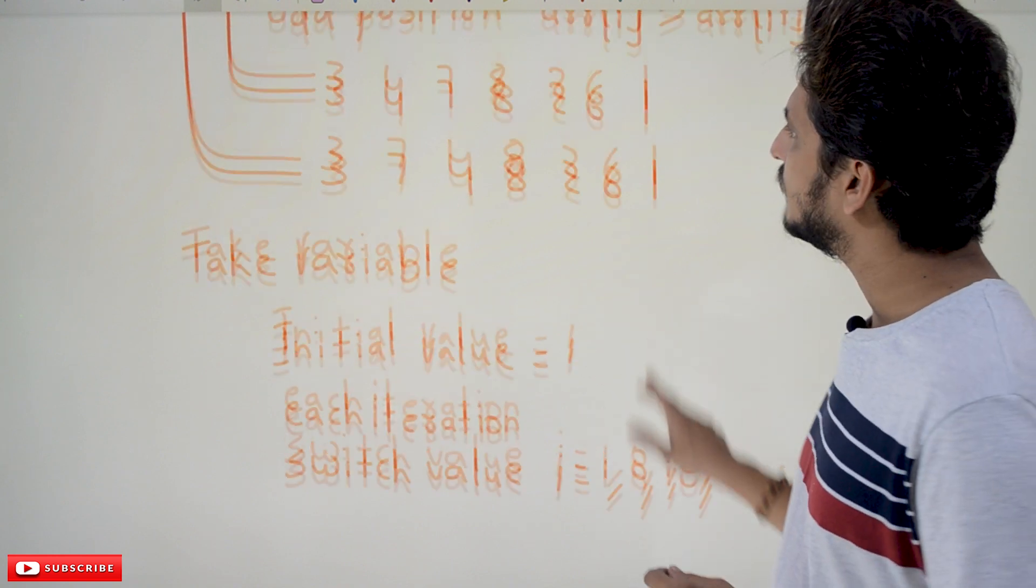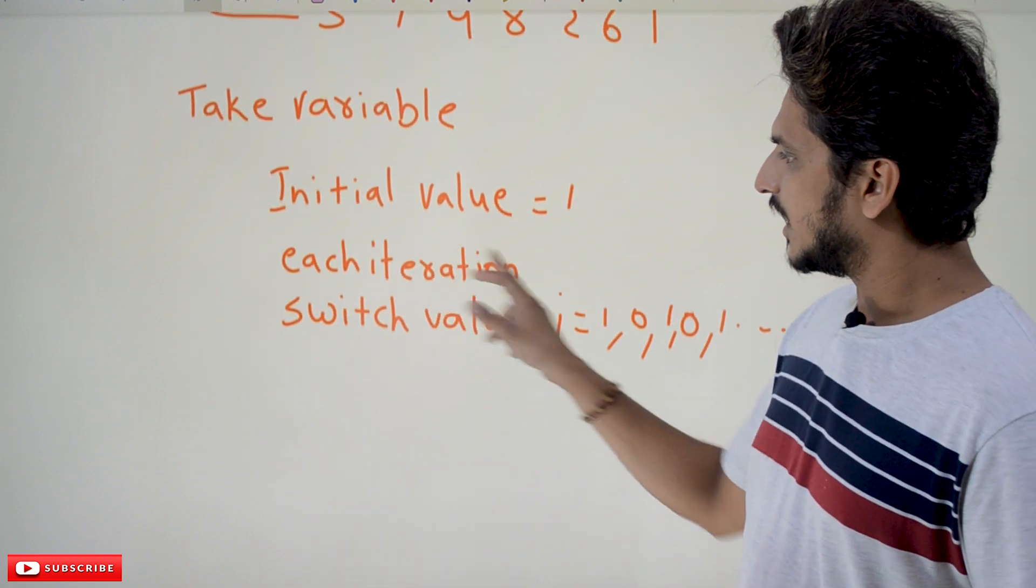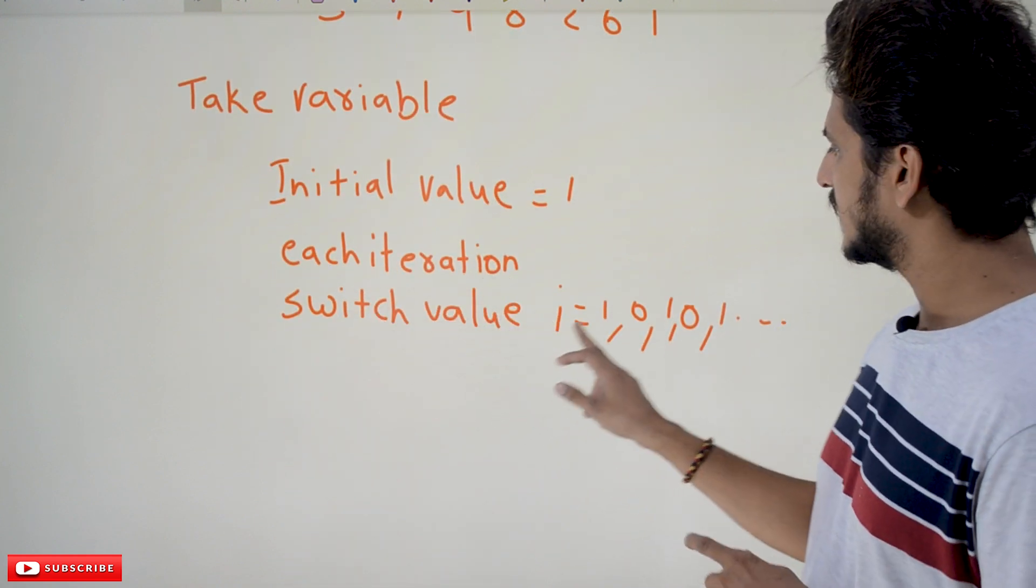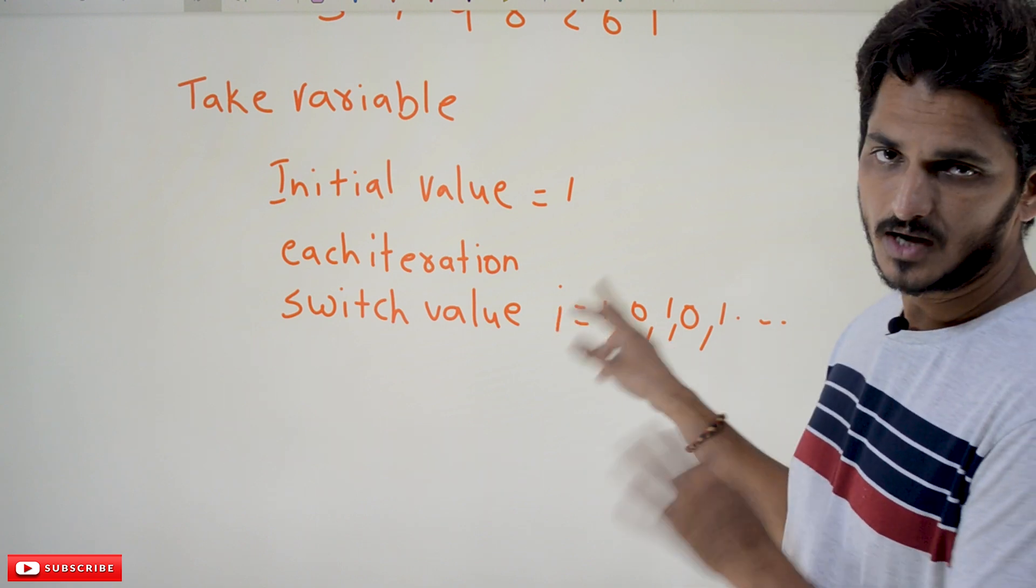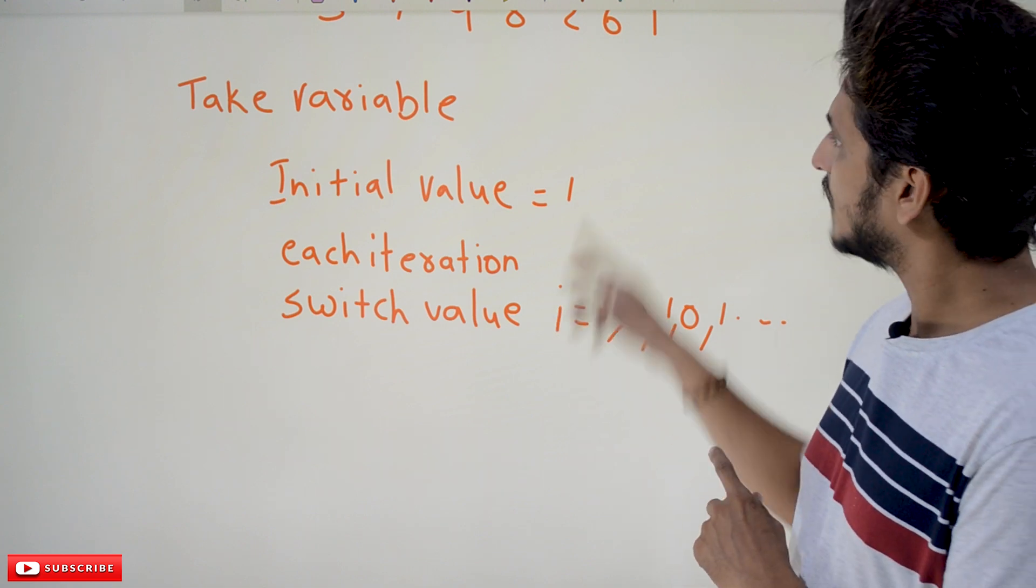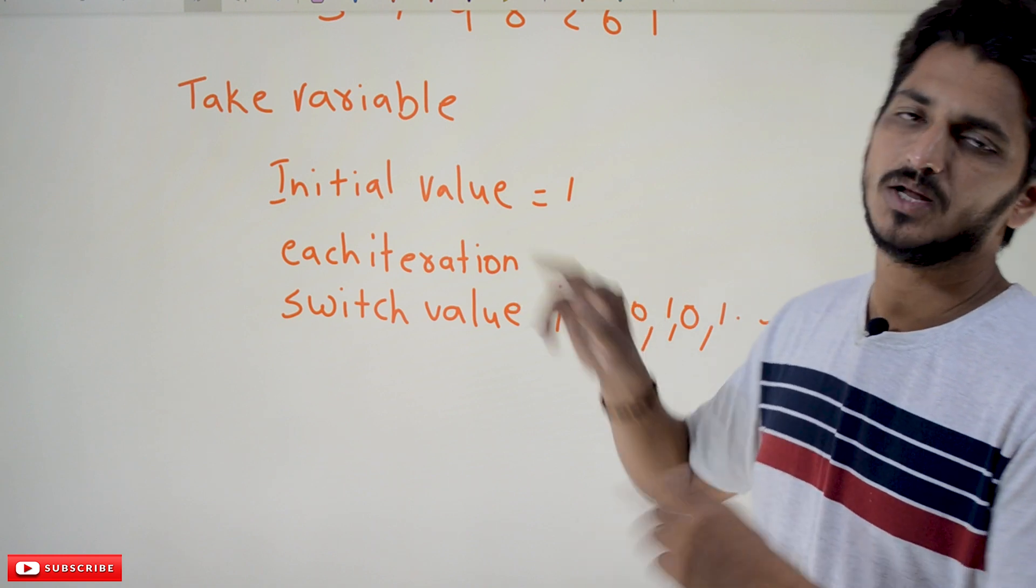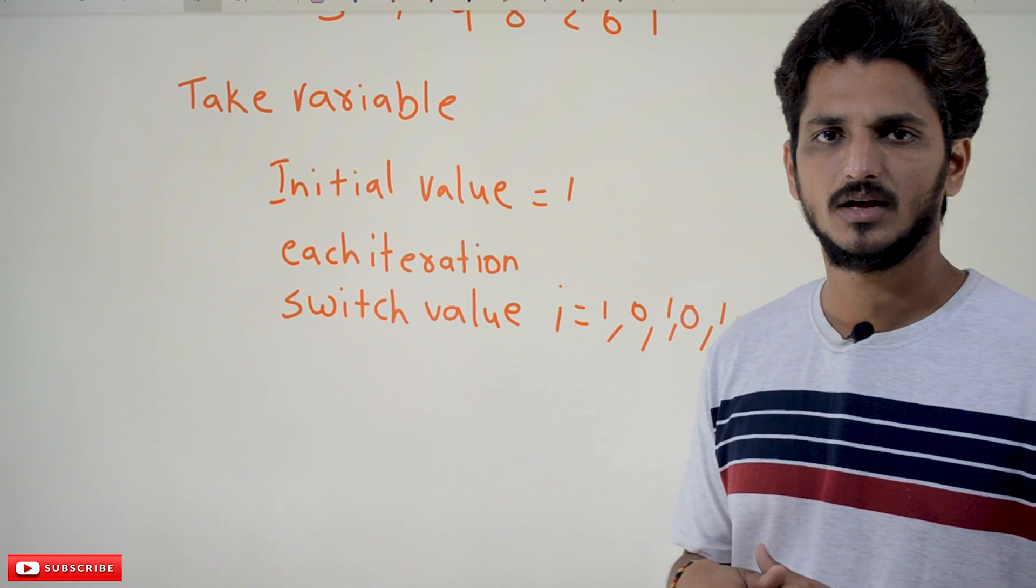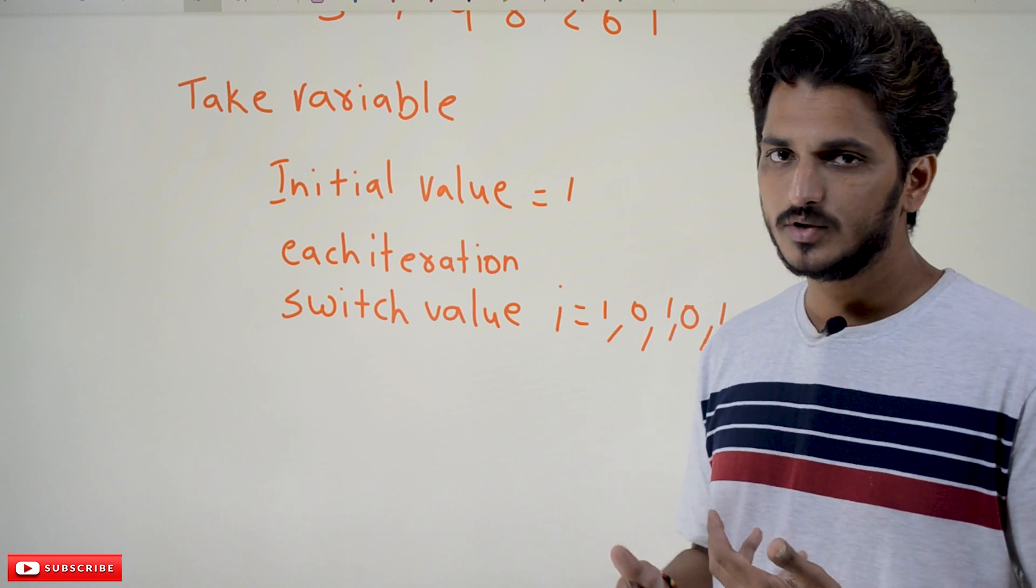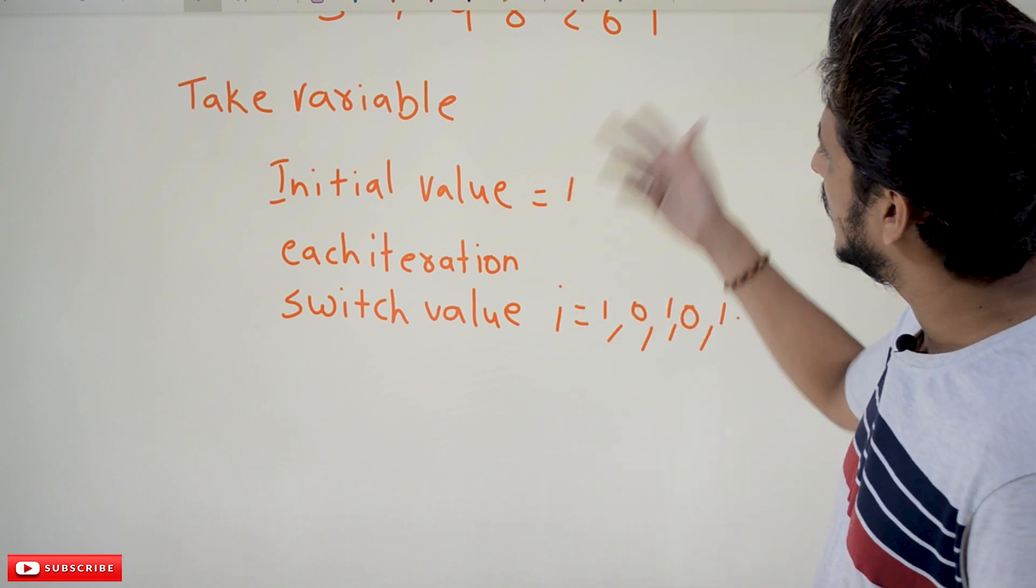But a very simple way is to initially take a variable and assign it as 1. If it is 1, apply the first condition. Each iteration, switch the value. i will become 1, 0, 1, 0, 1, 0. Take a variable i and switch the values. 1 means apply the first condition, 0 means apply the second condition, 1 means apply the first condition, 0 means apply the second condition.